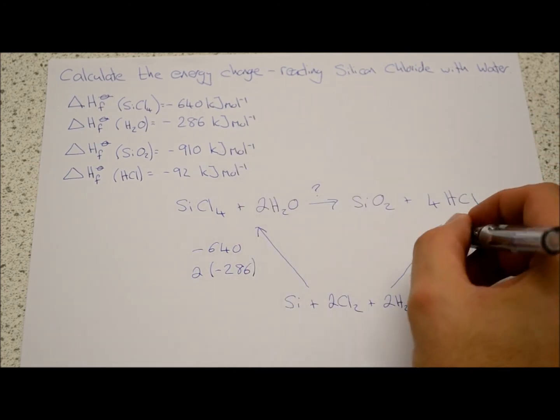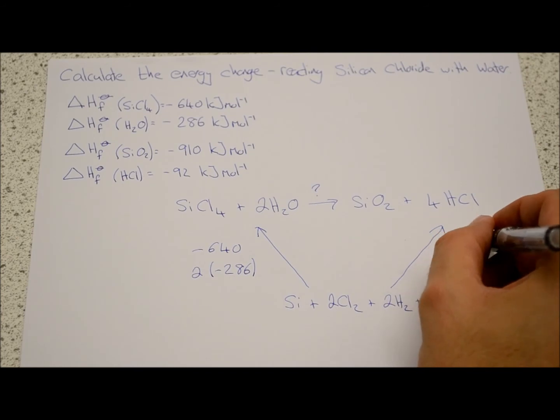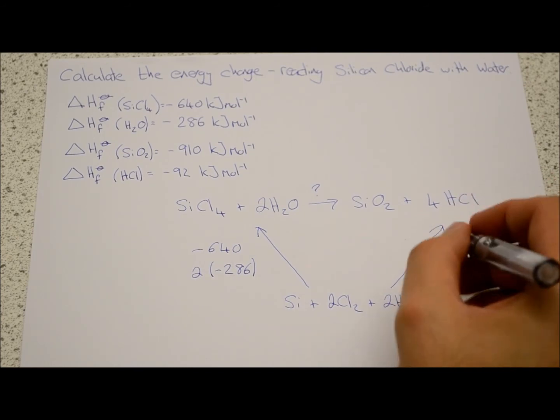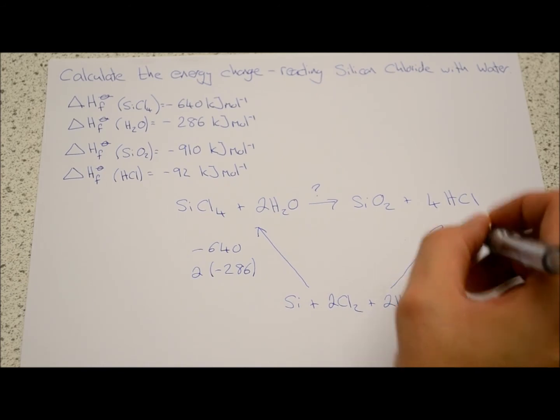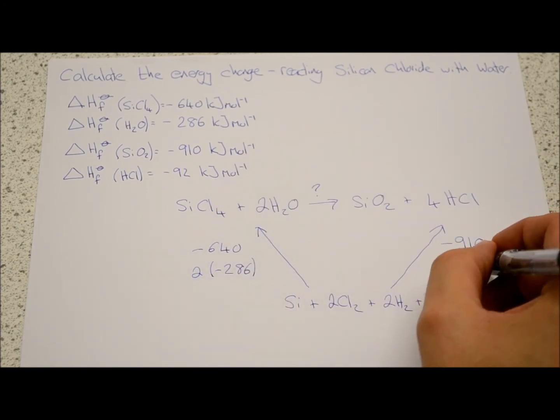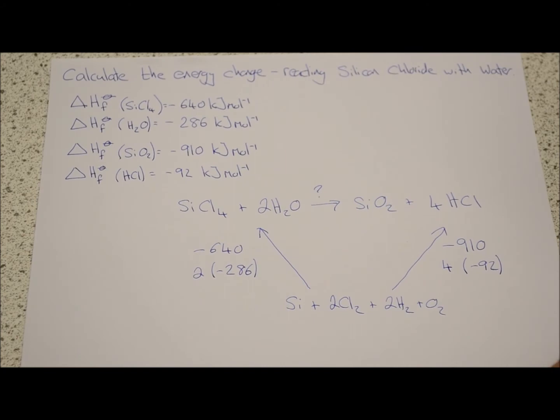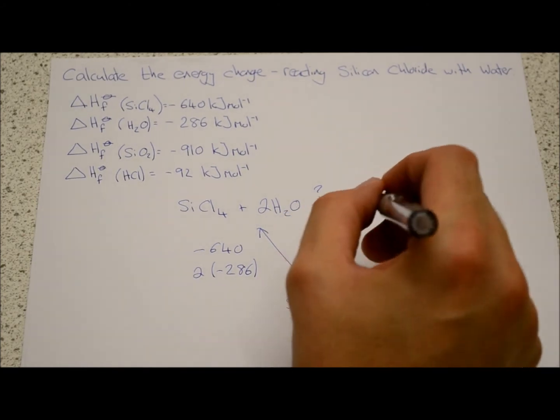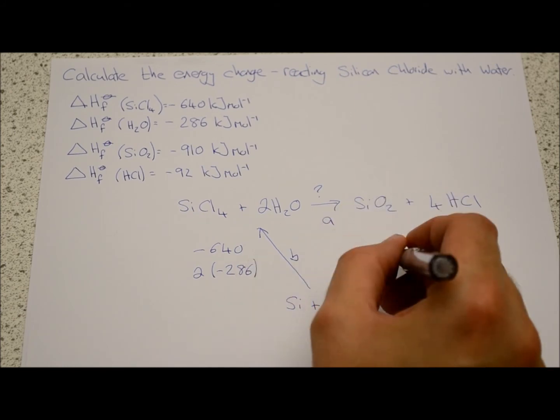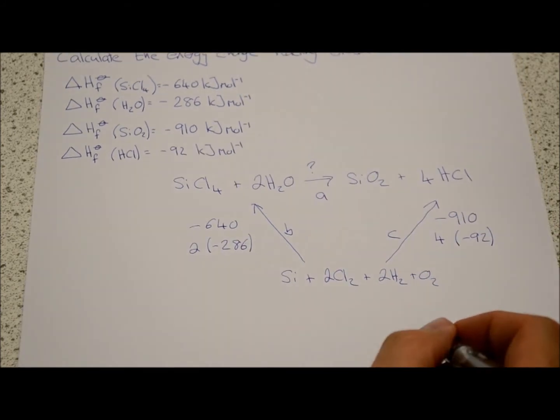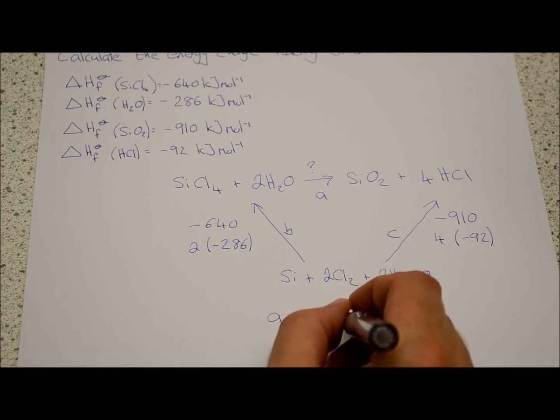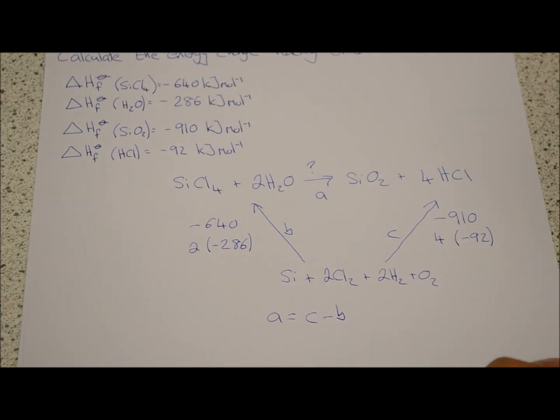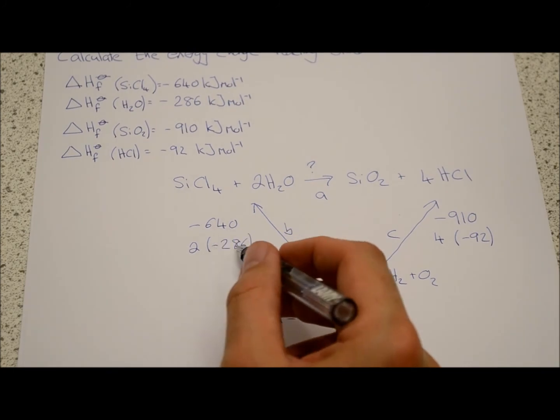And on this side we're going to make one mole of silicon dioxide, which is going to be minus nine ten, and four lots of hydrogen chloride, hydrochloric acid, four lots of minus ninety-two. Now if we do this again how we did last time with A, B, and C, we can see that A equals C minus B.